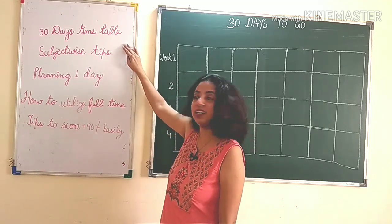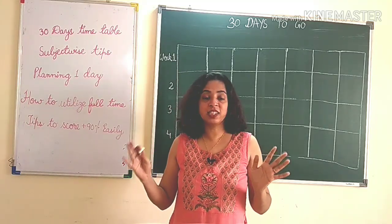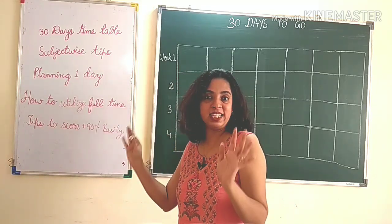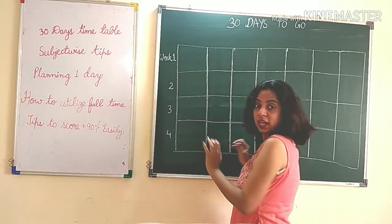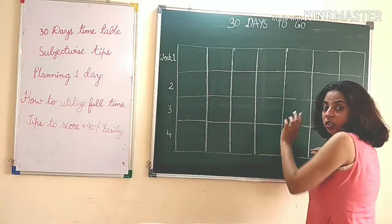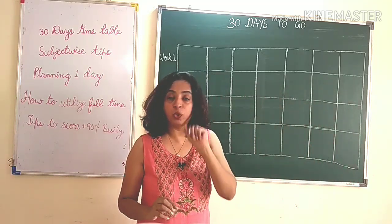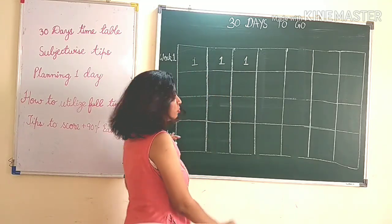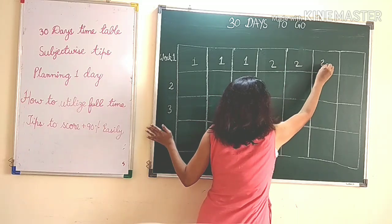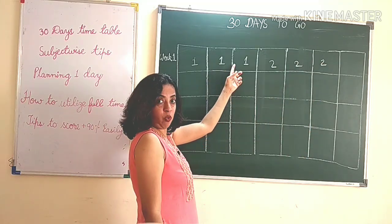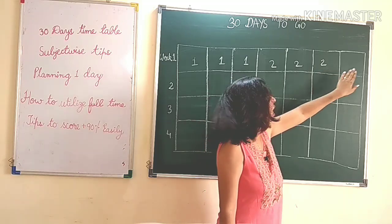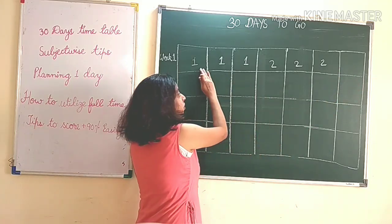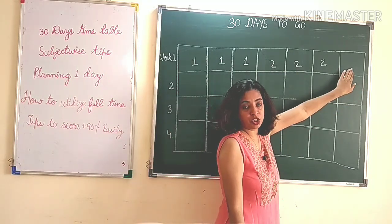First I'll teach you how to make a 30-day timetable. Let us assume you have eight papers to give. Each week you will study two subjects — three days for one subject and three days for the next subject, leaving one day spare. I am leaving this one day because any of these subjects might require extra preparation.